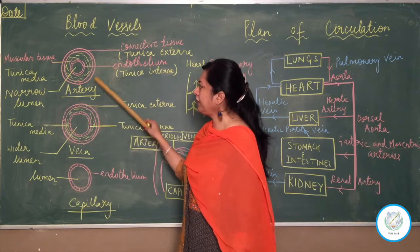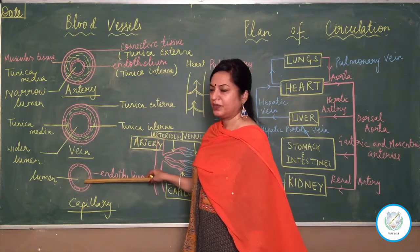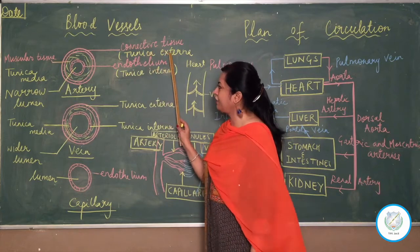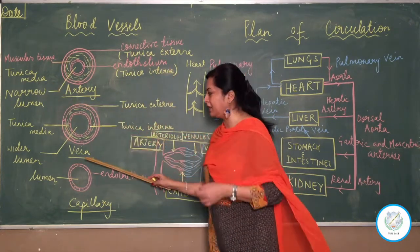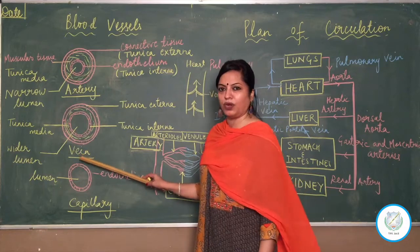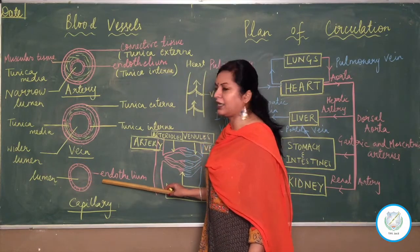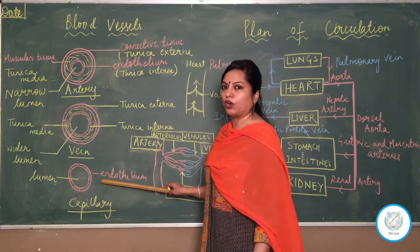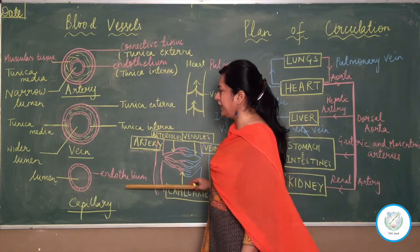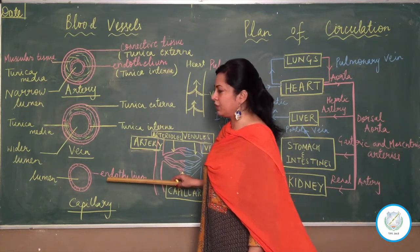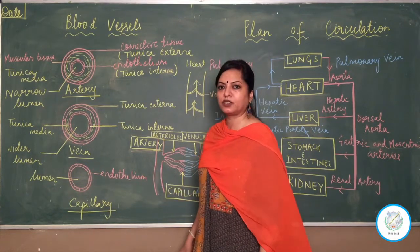Comparing artery and vein with capillary: a capillary does not have tunica externa or tunica media. It is extremely thin-walled and is surrounded by only a single layer of squamous epithelium cells, known as endothelium, with a lumen through which blood flows.